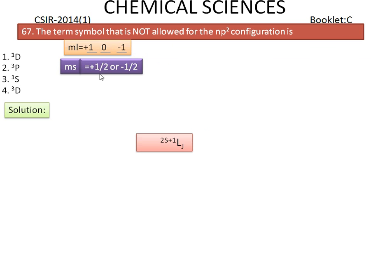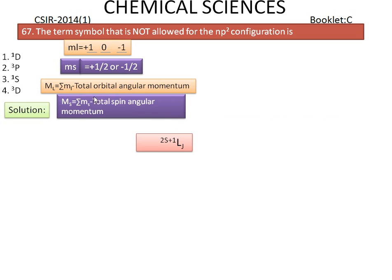The ms values are +1/2 or -1/2. The total orbital angular momentum ML can be calculated by summation of ml, and the total spin angular momentum MS by summation of ms. The 2p electrons are not independent of each other; their orbital and spin angular momenta interact through Russell-Saunders coupling, or RS coupling.